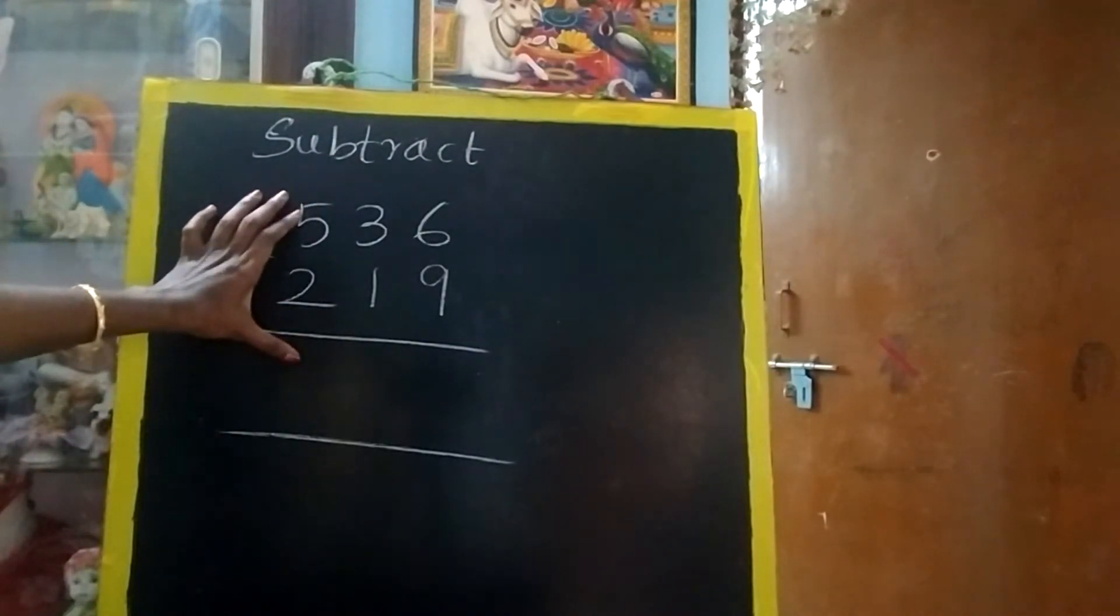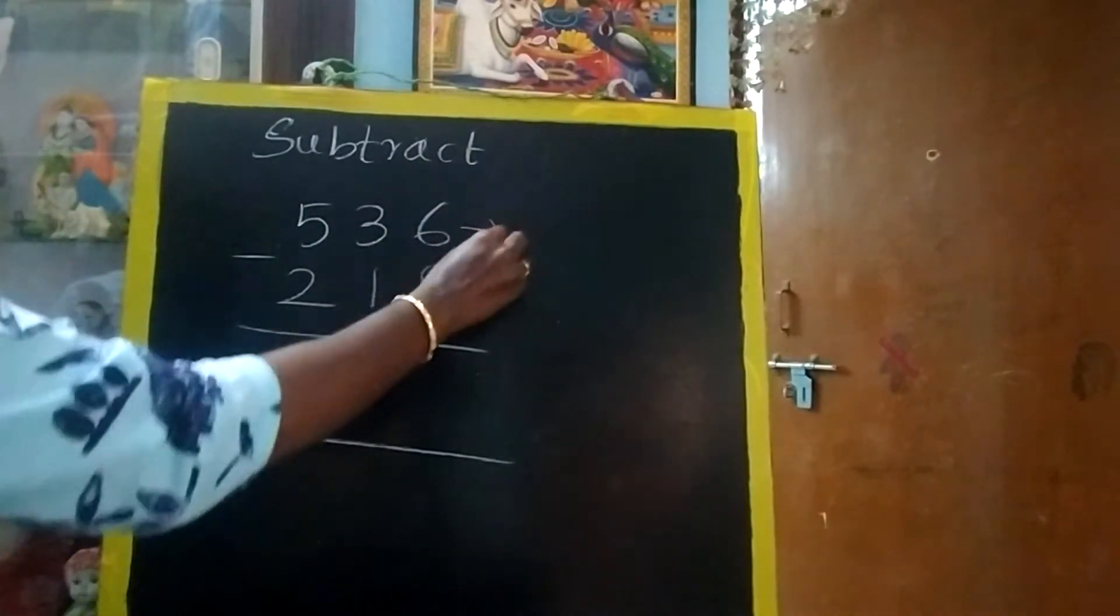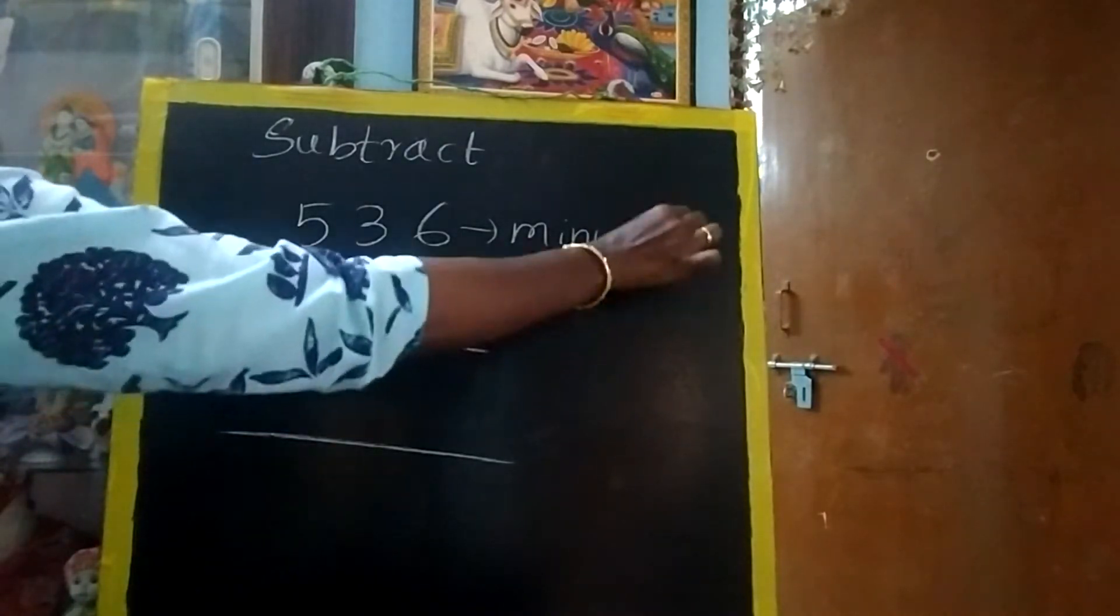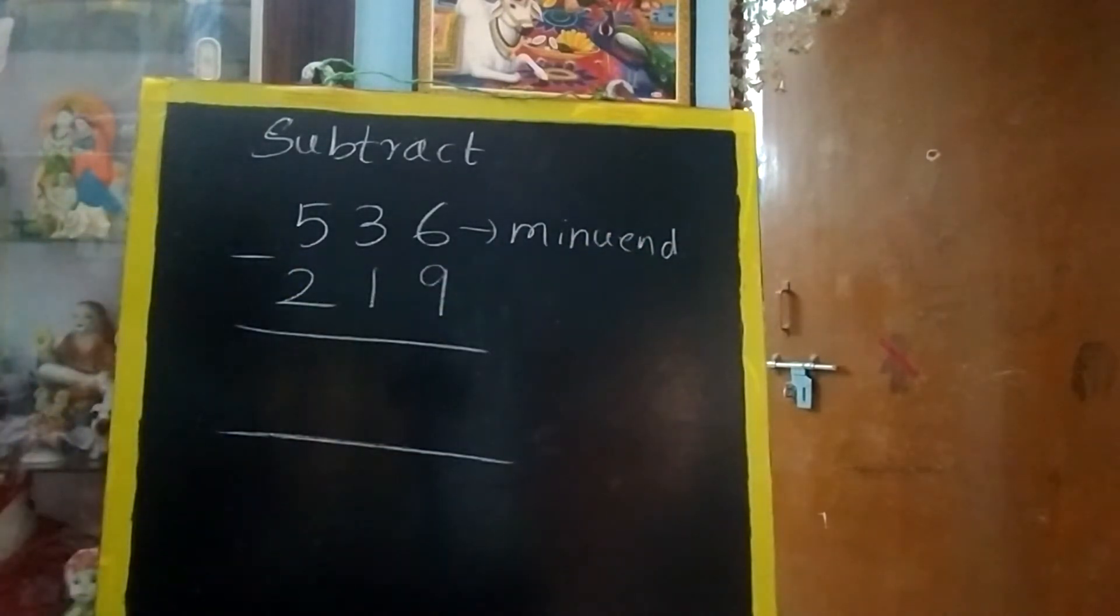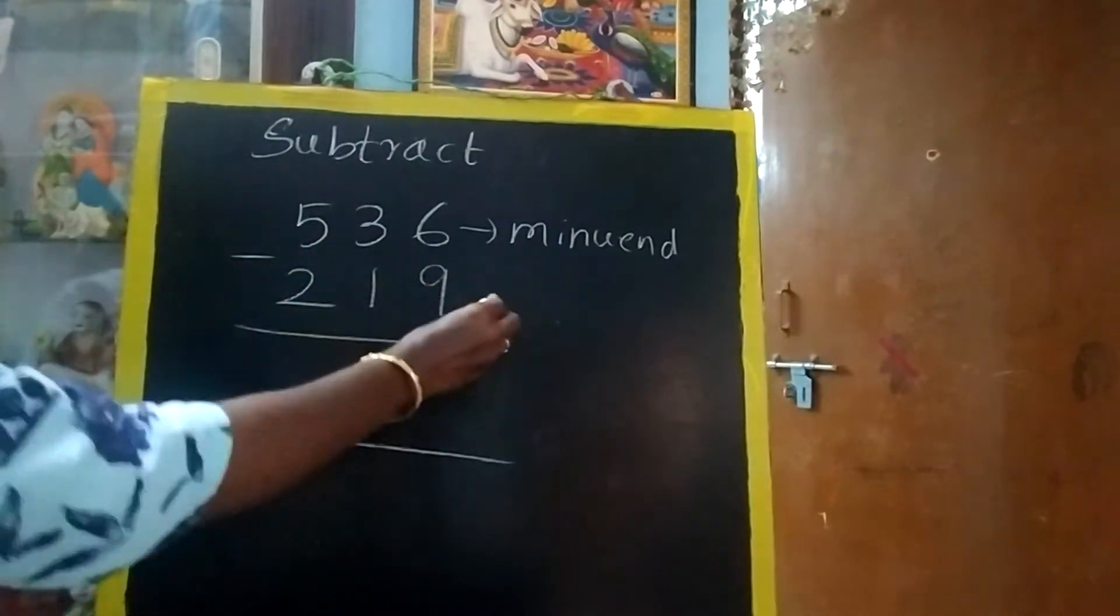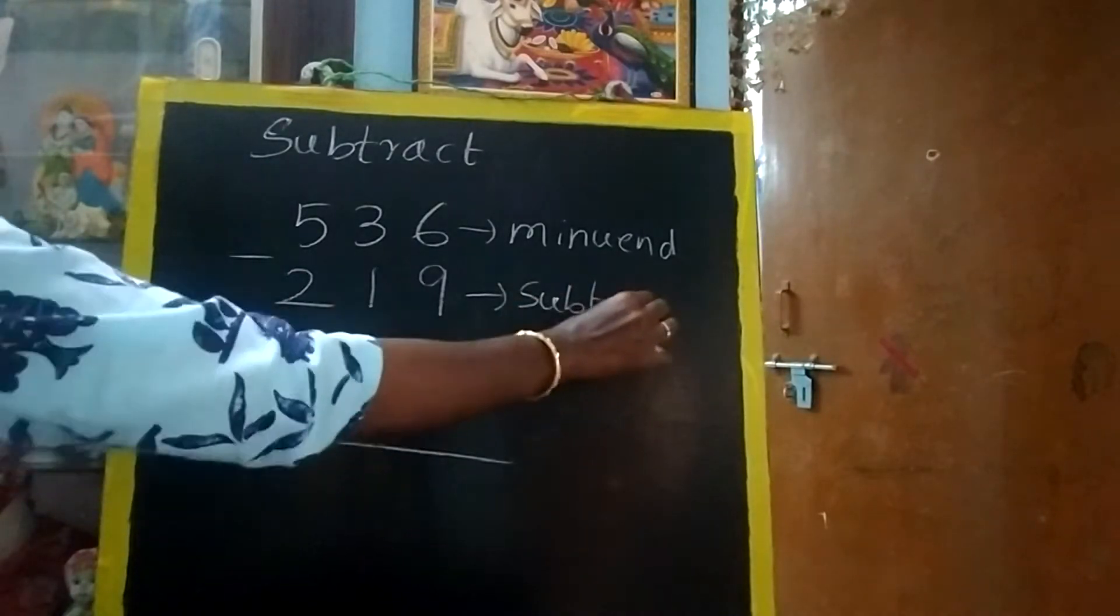Before that let's know the name of the terms. So the first term is called minuend. In subtraction, in addition we will say addend, here minuend. The second term from which number we are subtracting is called subtrahend.